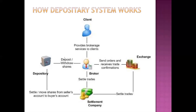By entering the demat account number, you get all details of shares held by the client. When the client wants to sell, he can put a sale option; when he wants to buy, he puts a buy option with the broker. The broker helps buy shares on behalf of the client from the exchange authorities or directly from companies. If it is an IPO, the issuing company is involved; if it is the secondary market, the stock exchange is used. When the share is purchased on behalf of the client, the purchase information is transferred to the depository. The depository sends it to the settlement company, which settles it by transferring shares from seller to buyer, and the client's account is credited.